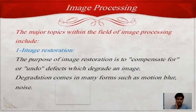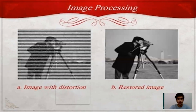The major topics within the field of image processing include, first, image restoration. The purpose of image restoration is to compensate for or undo defects which degrade an image. Degradation comes in many forms such as motion blur and noise. We can see the example for image restoration — these are two pictures showing before and after.